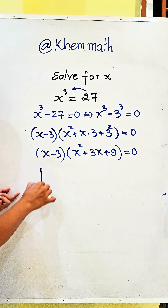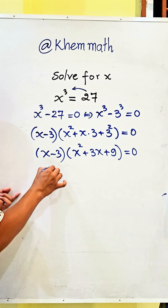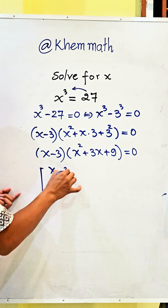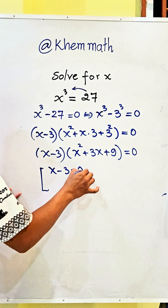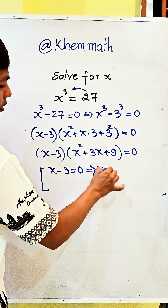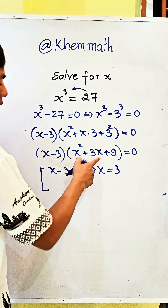Here x minus 3 equals 0, so we get x equals 3.